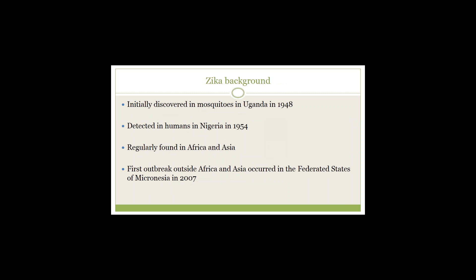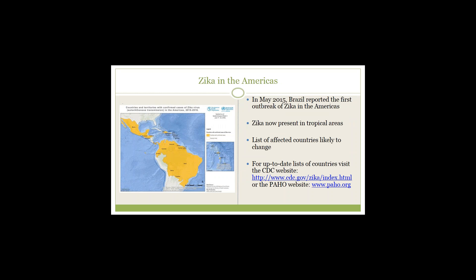Until recently, outbreaks have mostly occurred in Africa and Asia. The first outbreak outside of Africa and Asia occurred on the island of Yap in the Federated States of Micronesia in 2007. In May 2015, Brazil reported the first outbreak of Zika in the Americas.